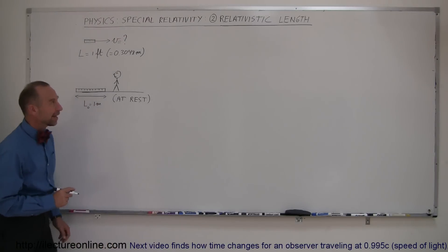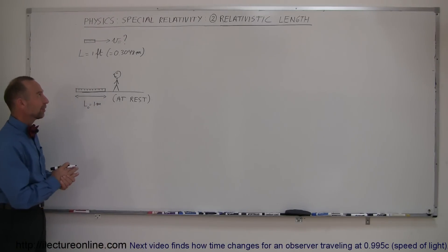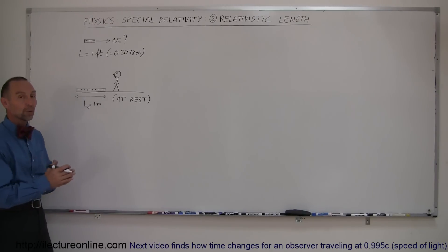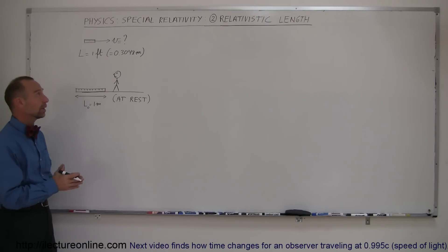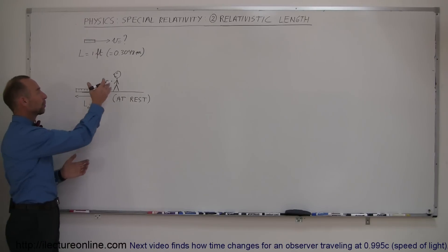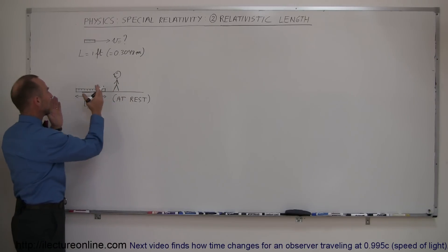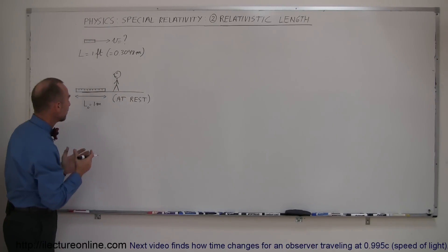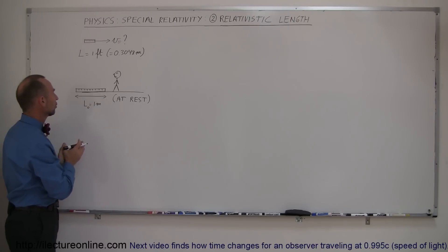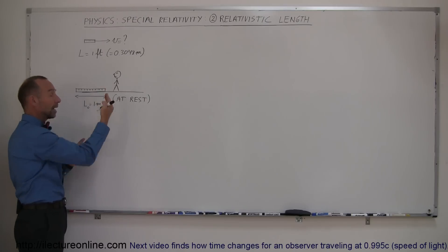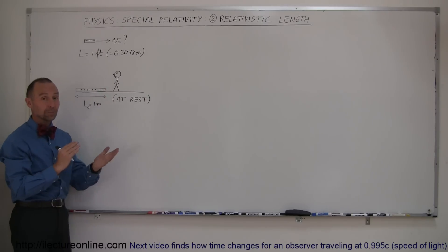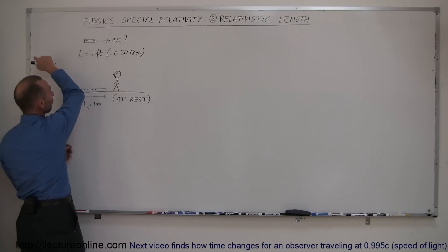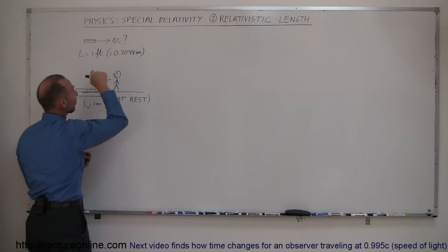Welcome to iLecture Online. Continuing with special relativity, we're going to look at how length changes when things start moving really fast. Let's say we have a person at rest and next to that person is a measuring stick — a meter stick, one meter long — sitting there. Of course we look down and we see it as one meter long. But what if the very same meter stick flies by at a very high speed?